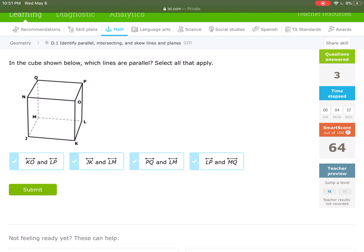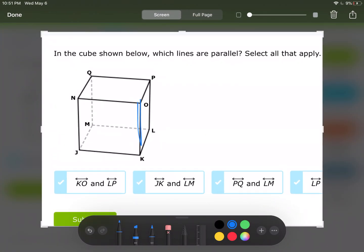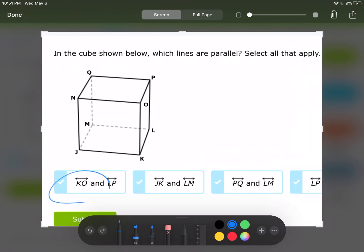Which lines are parallel? So select all that apply. Parallel lines must be in the same plane. Let me try KO-LP. That looks promising. I'm going to select that one. JK-LM. Same plane, they're never going to touch. Yes, those are parallel.